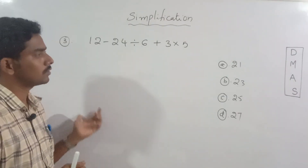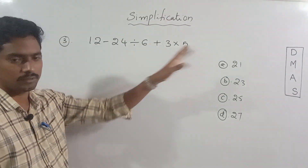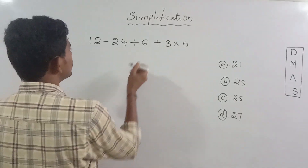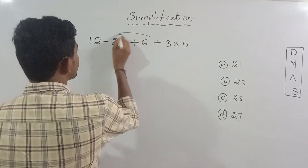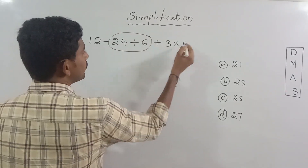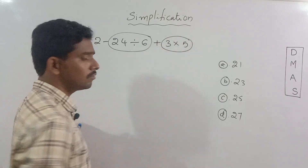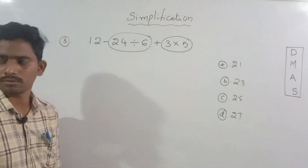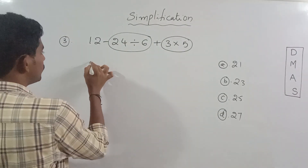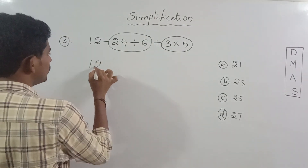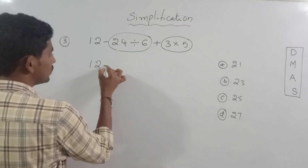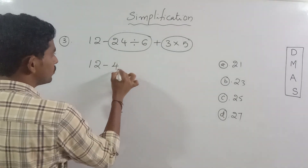So in this sum we have division. Division is here. So where is the division? 24 divided by 6: 6 times 4 is 24. So minus 4.